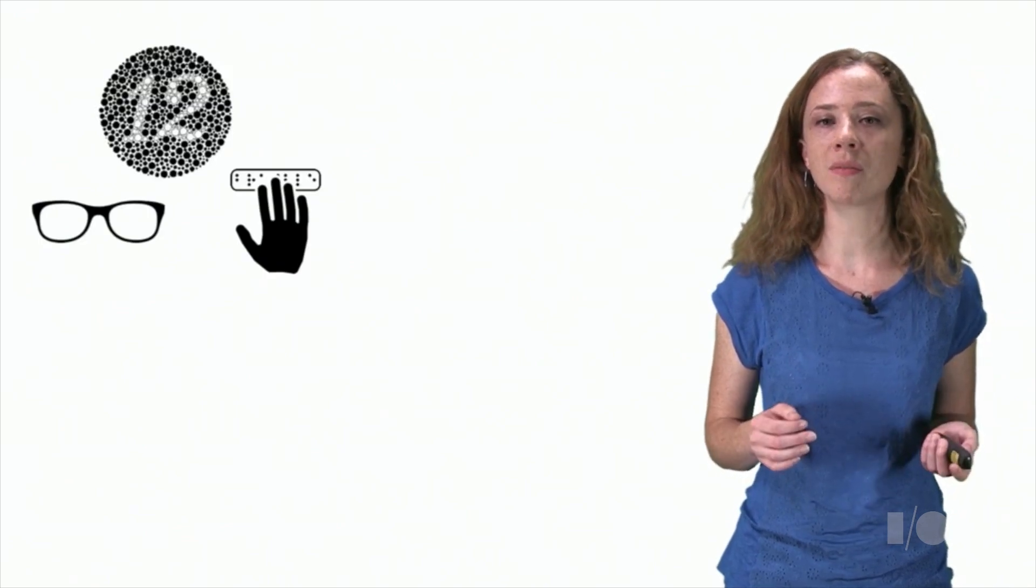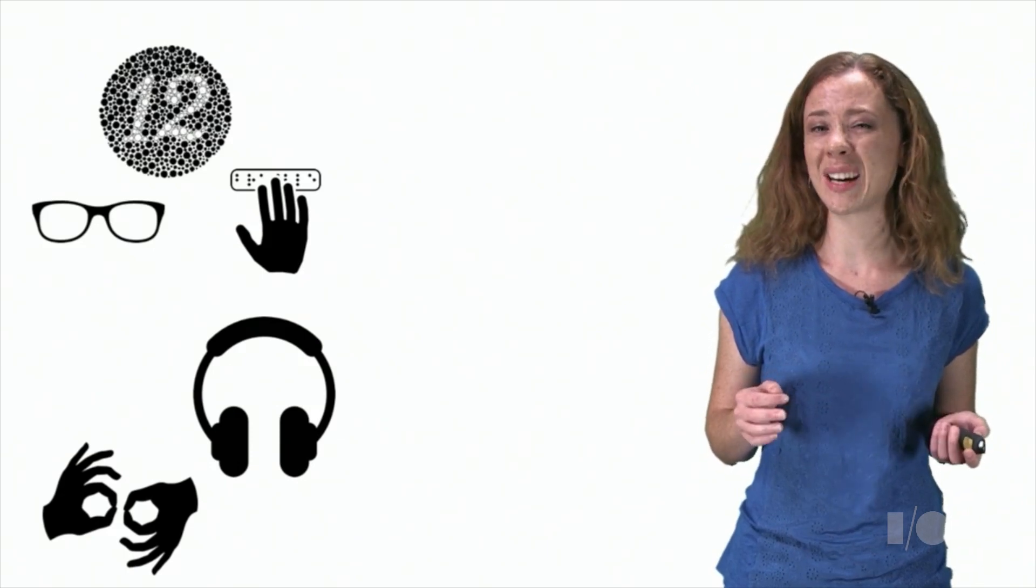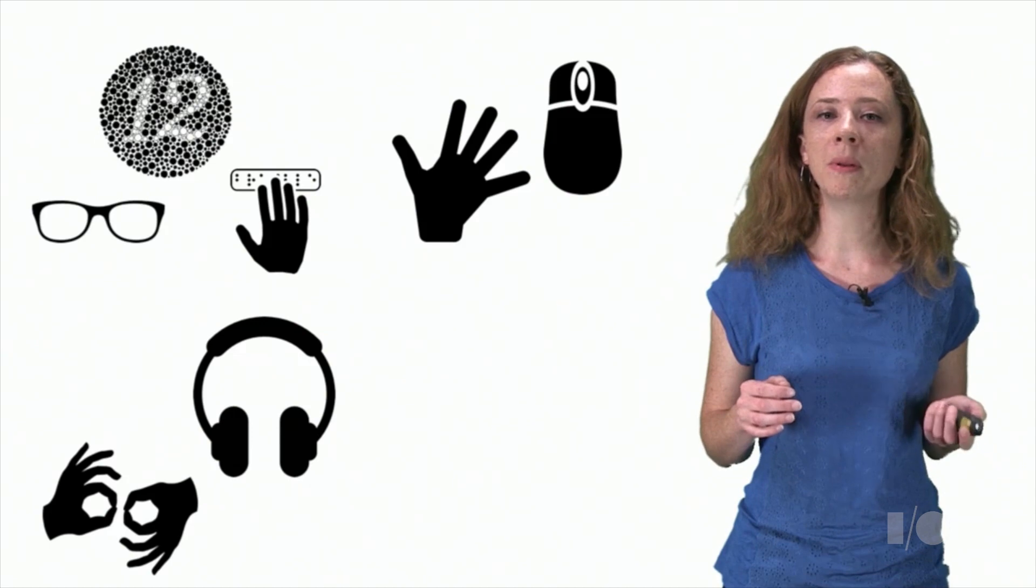When we talk about all users, there are several broad classes of impairment that we consider. Visual impairment, which could range from poor color vision through low vision to no vision. Hearing issues, whether a user is deaf, hard of hearing, or simply can't use their device's audio output. Mobility or motor impairment, whether temporary or permanent, such as a broken arm, RSI, or long-term motor disorder.